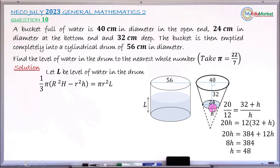So the height of the small cone that was cut and removed to get this bucket is 48 centimeters. Which means the height of the larger cone, capital H, will now be 32 plus 48, which gives answer 80 centimeters.